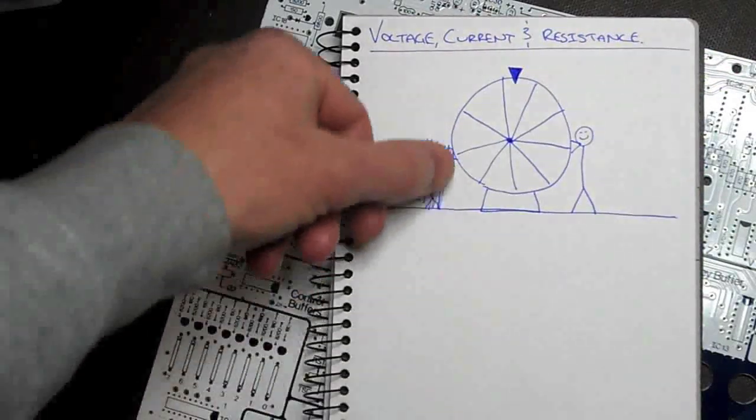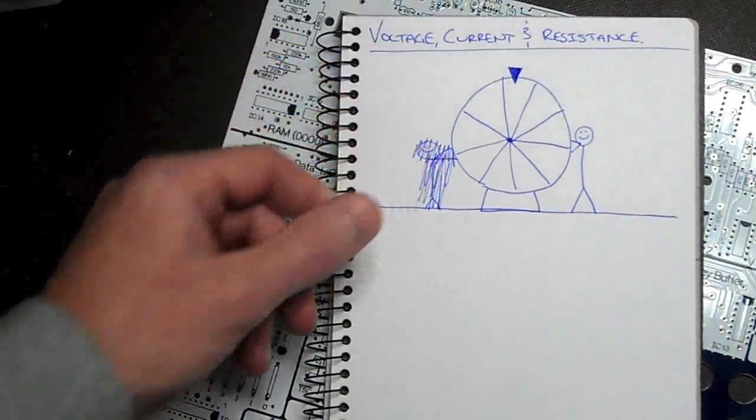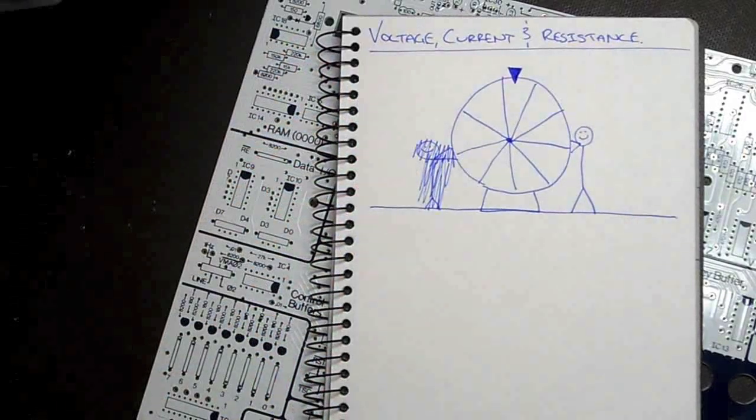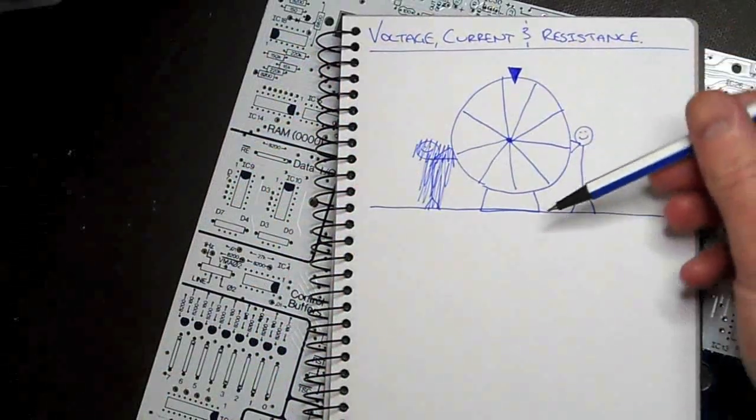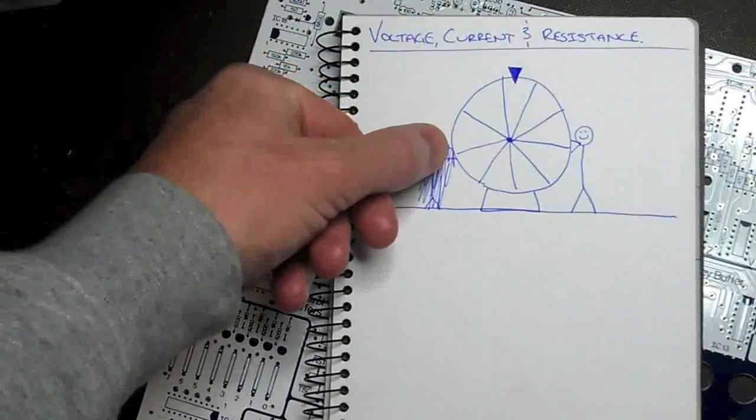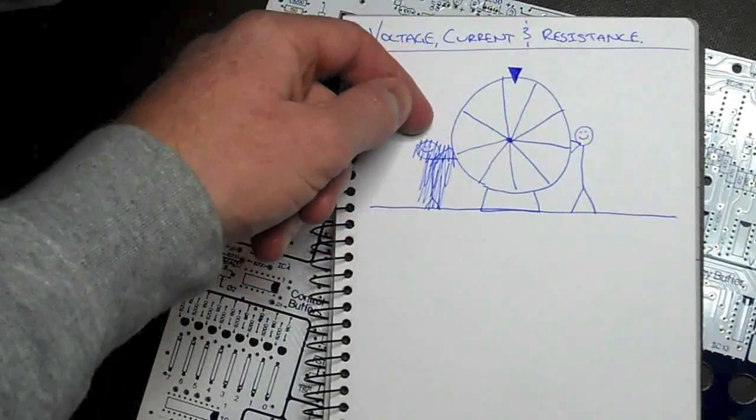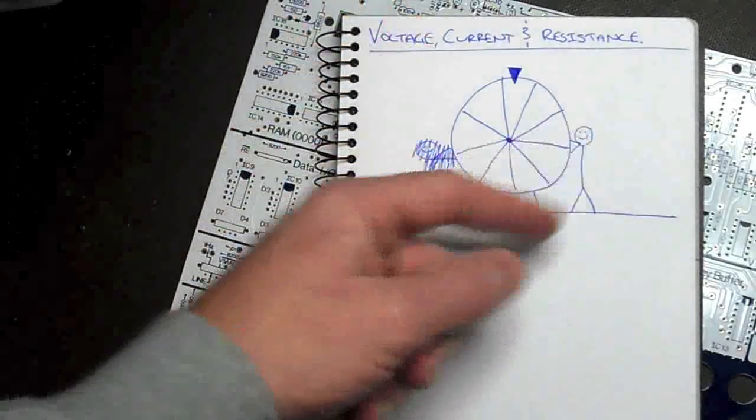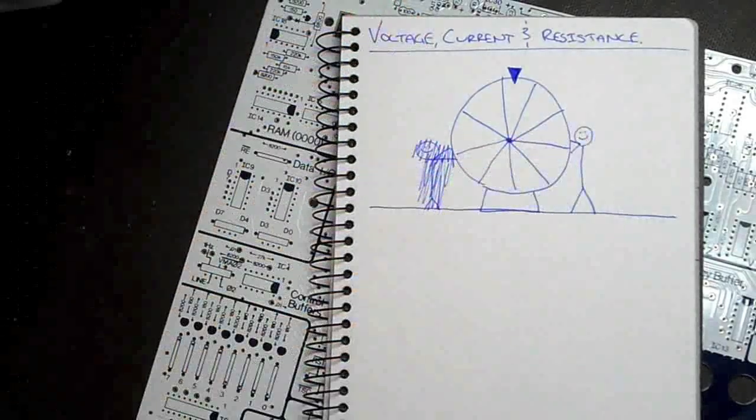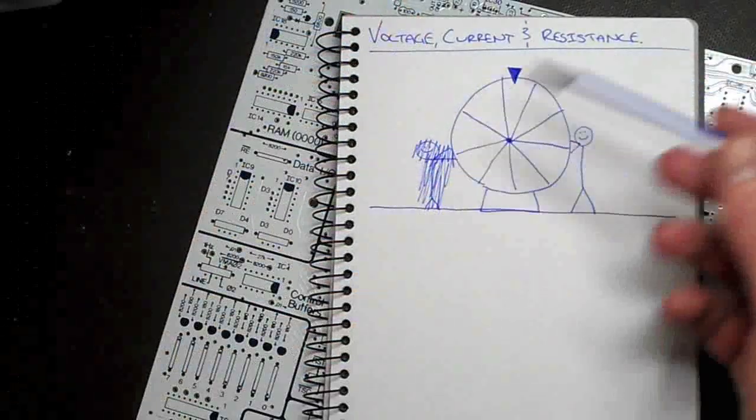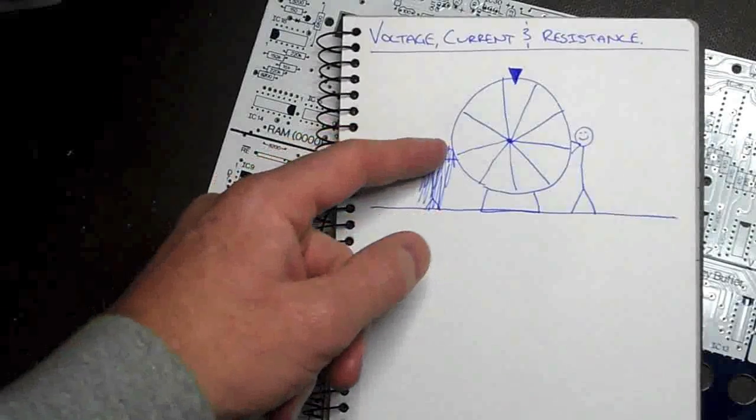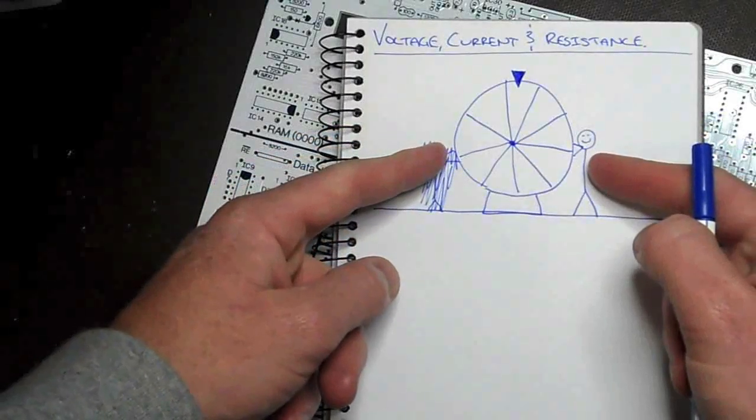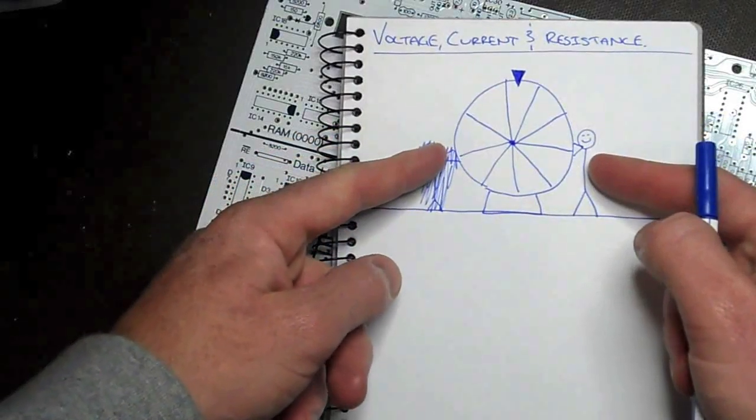So in this case, if we took this person away, we've now got a difference in potential. You're pushing down over here. Over this side, there's no potential trying to push this way, or there's no force trying to go this way. So there's a difference, and the wheel will spin. If there was exactly the same potential or force on either end, it wouldn't turn at all.